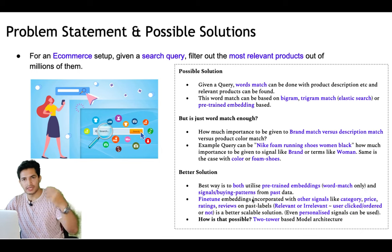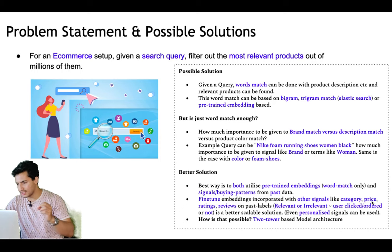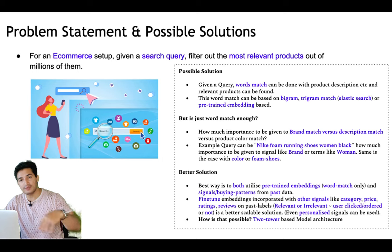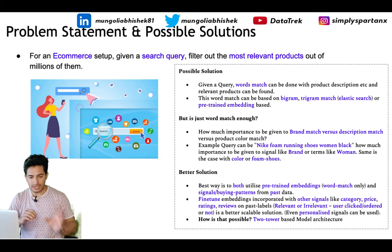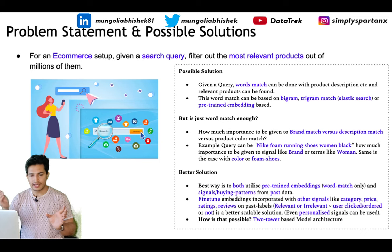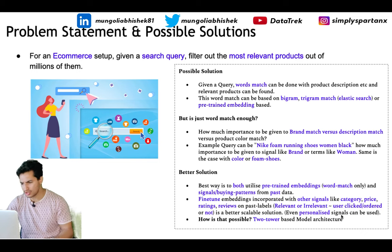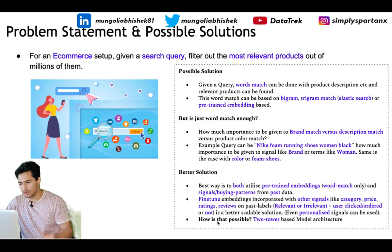If we have past data we know which products converted well for which queries. We can use pre-trained embeddings and also look at buying patterns from past users to fine-tune these embeddings with additional signals like category, price, rating, and reviews. Different users may have different tendencies toward price, so we can build personalized models. For the same query, different user segments might see different items first based on their price sensitivity and brand history.